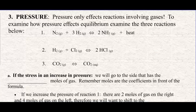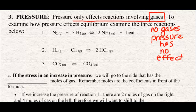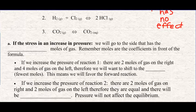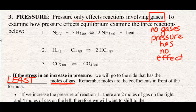The final stress is pressure, and what you need to know is that it will only affect reactions involving gases. So if there are no gases, pressure does not have an effect. You can change the pressure by changing the volume. If the stress is an increase in pressure — and this one is a bit different — if you increase the pressure, you go to the side that has the least moles of gas. Moles are the coefficients in front of the formula.